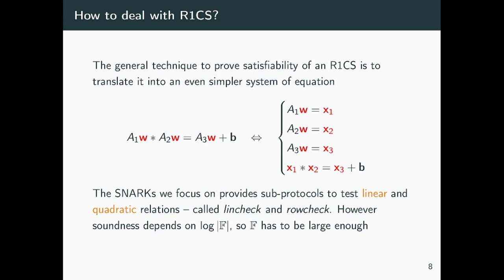Even given a rank-1 constraint system problem, that is essentially defined by the matrices A1, A2, A3 and b, one can simplify it even more and split it into four equations, three of them linear and one of them being quadratic.